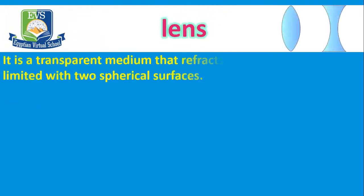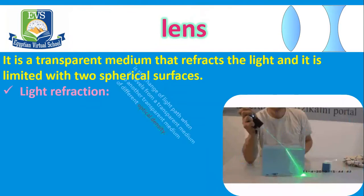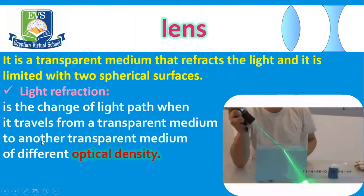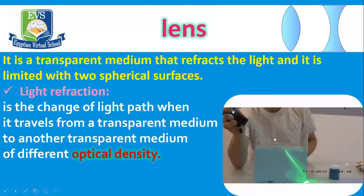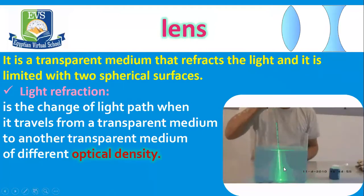What is a lens? A lens is a transparent medium that refracts light and is limited by two spherical surfaces. Light refraction is the change of the light path when it travels from one transparent medium, such as air, to another transparent medium, such as water, where these two mediums have different optical density.